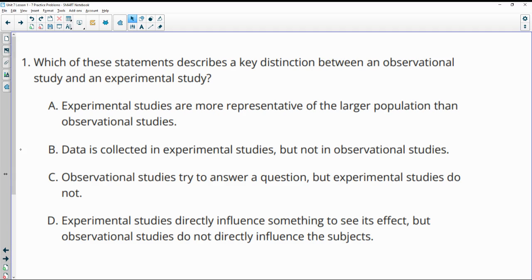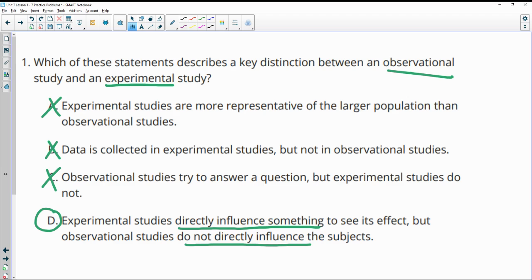Number one, which of these studies describes the key distinction between an observational study and an experimental study? So an observational study doesn't influence the effect where an experimental study does. It doesn't have anything to do with population size, which is what part A is talking about. Data is collected in both, so it's not about B. Observational studies try to answer a question, experimental studies do not—they both try to answer a question, so that's not right. So it must be D. Experimental studies directly influence something to see the effect where observational studies do not directly influence. So that's the difference.